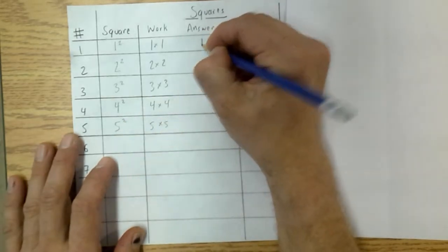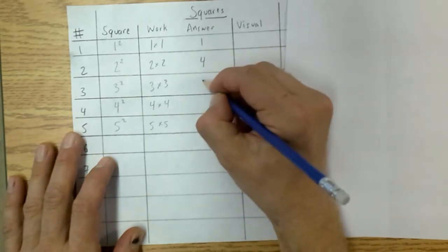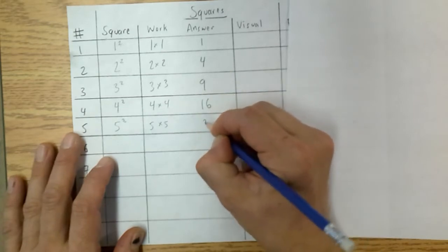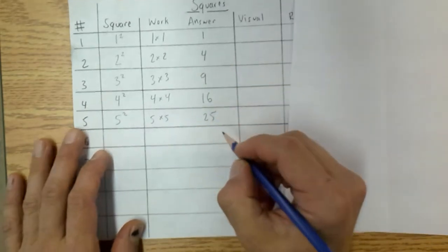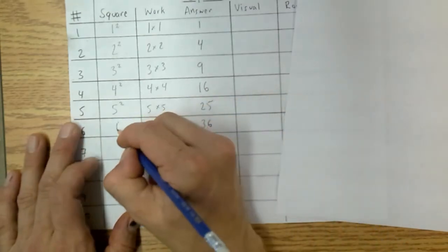So our answer then for 1 squared is 1. 2 squared, the answer is 4. 3 squared, the answer is 9. 4 squared is 16. 5 squared is 25. And we can keep going down and we'll find that we have 36 would be for 6 squared.